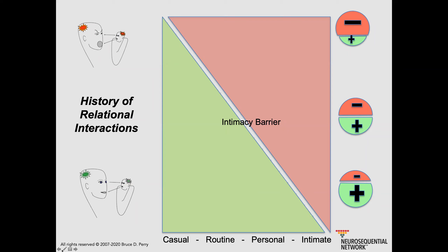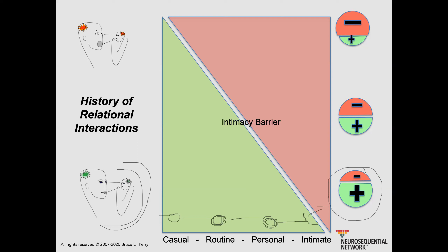You can have somebody who's had a generally positive set of human experiences. They can have casual interactions with human beings and not feel threatened. They can have routine interactions where the rules are clear — like in school or at work. They can have personal interactions where somebody asks about something personal and it still doesn't feel threatening. They can even have intimate interactions. But no matter how well regulated you are, no matter how healthy your internal catalog is, there are some things that are very intimate, and unless you invite somebody in, it will feel threatening if somebody crosses that barrier.